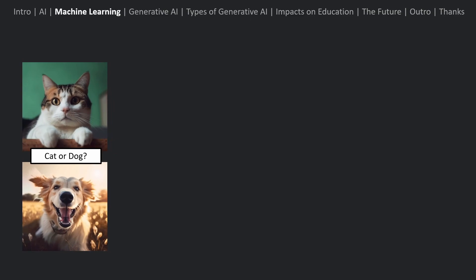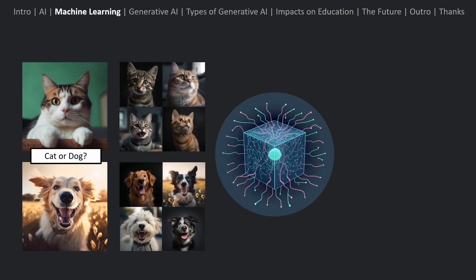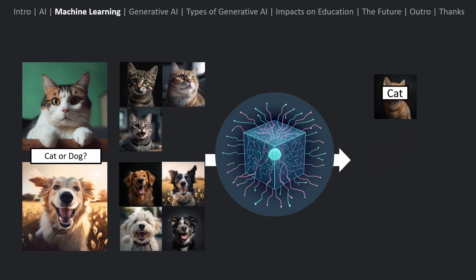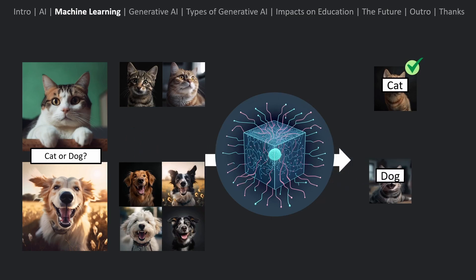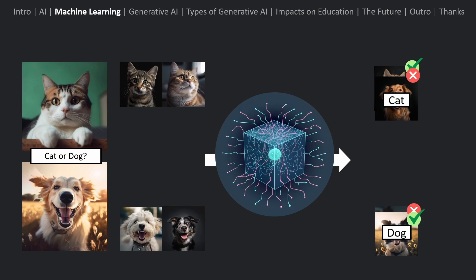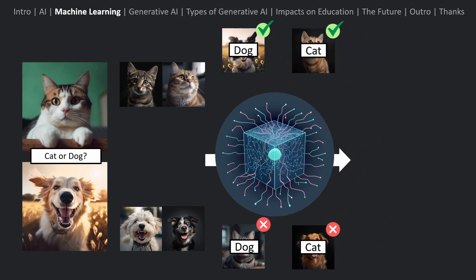What would it look like if we used machine learning to solve this same problem? We would start off by gathering data — in this case, images of cats and images of dogs. Attached to these images would also be a label containing the correct answer, similar to how a human might learn by using flashcards. After collecting the data, we would start training this algorithm by giving it our images and grading the answers it gives us, much like a human on a multiple choice test. At first, our algorithm wouldn't understand the difference between cats and dogs, so it would be answering basically randomly, and it would probably get about half of them wrong.